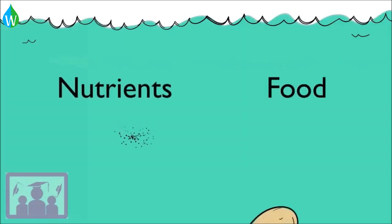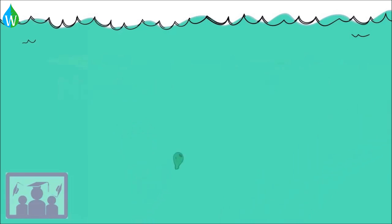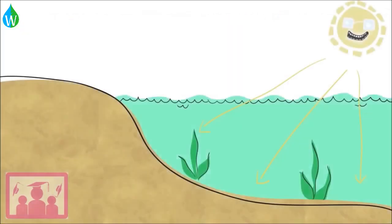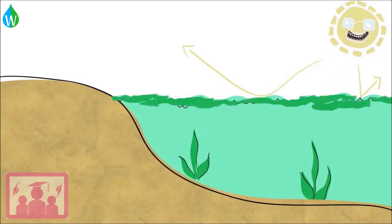The nutrients are food for algae, and the algae grow and reproduce quickly, forming a thick green bloom in the water. This algal bloom absorbs sunlight shining on the water, so the sunlight can't reach the bottom.